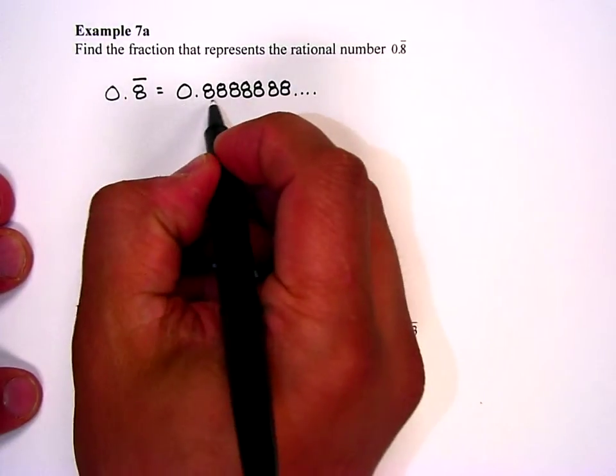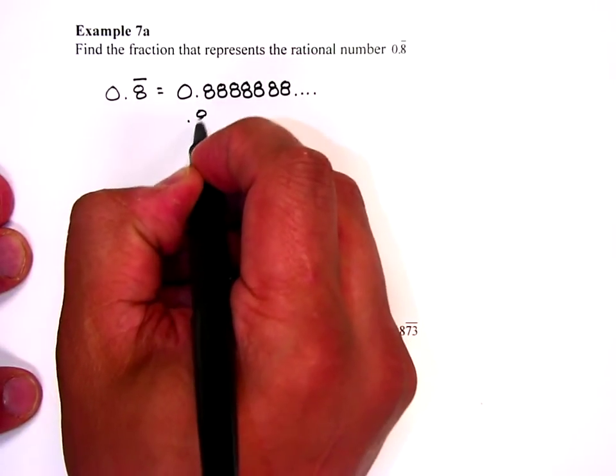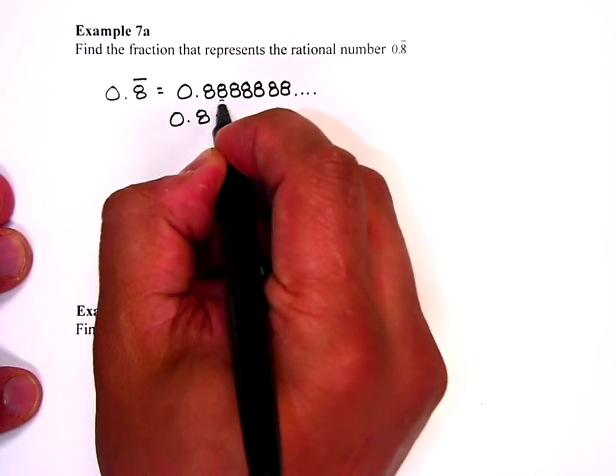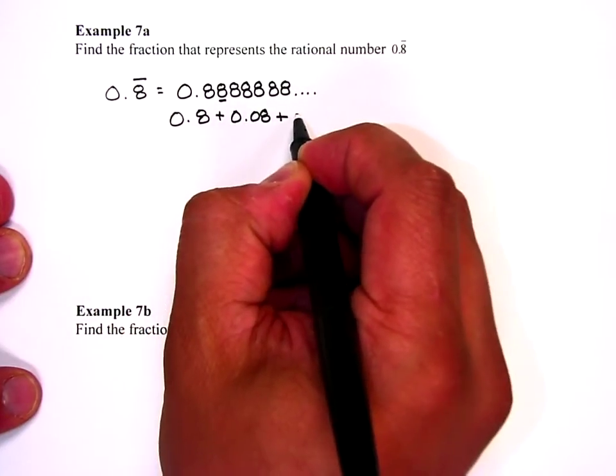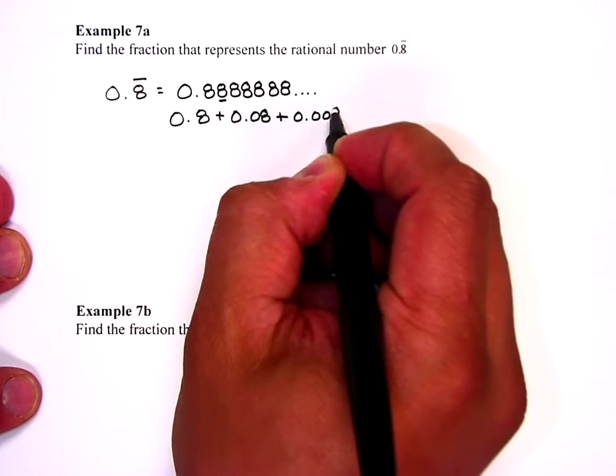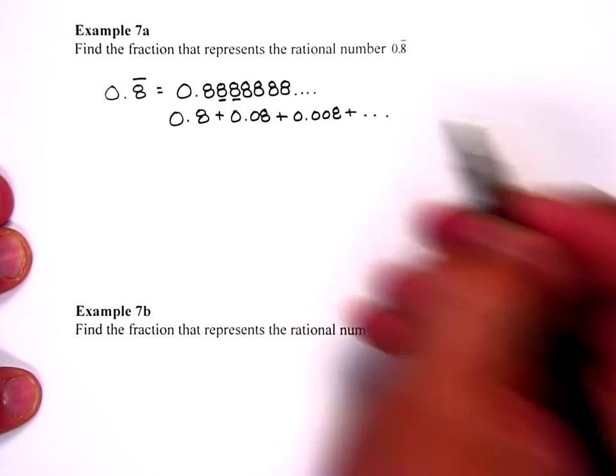Well if I think about it in these terms, that first term is 0.8. The second 8 represents 0.08. The third is 0.008 and so on and so forth. This is going to keep going on and on.